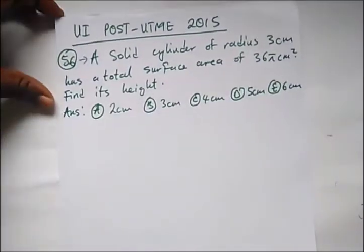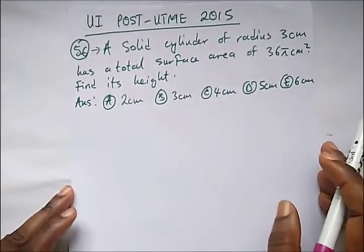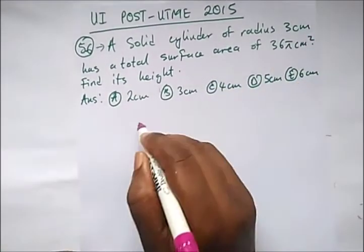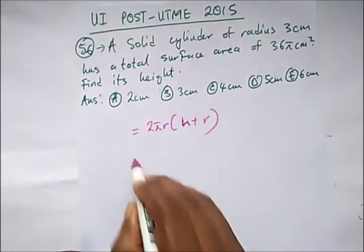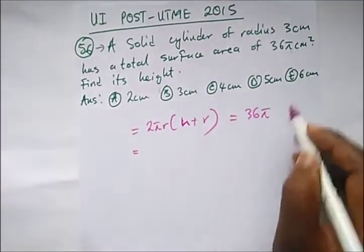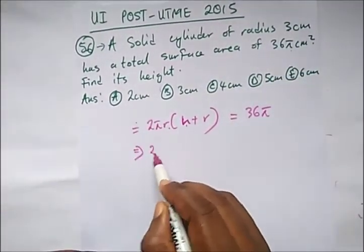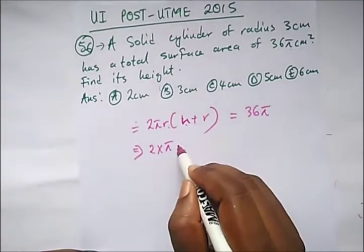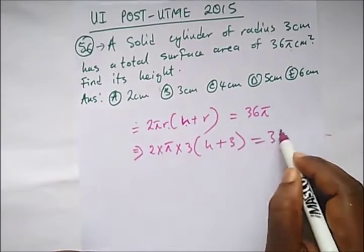Another question says: a solid cylinder of radius 3 cm has a total surface area of 36π. Find its height. The formula for the total surface area of a cylinder is 2πR(H + R). We're told the total surface area equals 36π and R = 3, so let's put in these values. They didn't give us π as 22/7, so we leave π alone. We get 2π(3)(H + 3) = 36π, which simplifies to 6π(H + 3) = 36π.